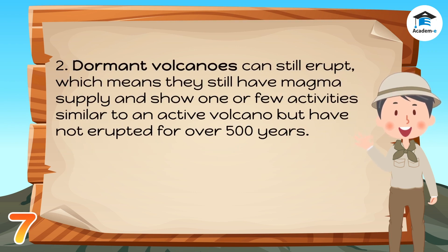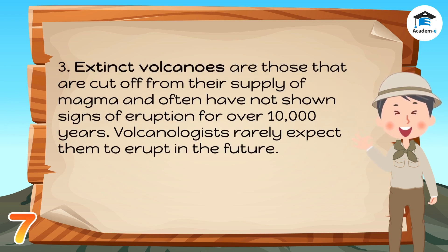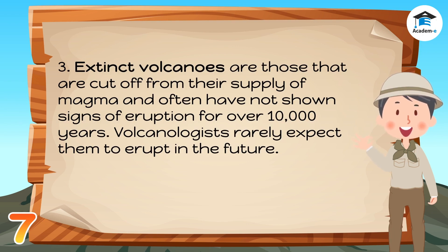Dormant volcanoes can still erupt, meaning they still have a magma supply and show one or few activities similar to an active volcano, but have not erupted for over 500 years. Extinct volcanoes are those that are cut off from their supply of magma and often have not shown signs of eruption for over 10,000 years. Volcanologists rarely expect them to erupt in the future.